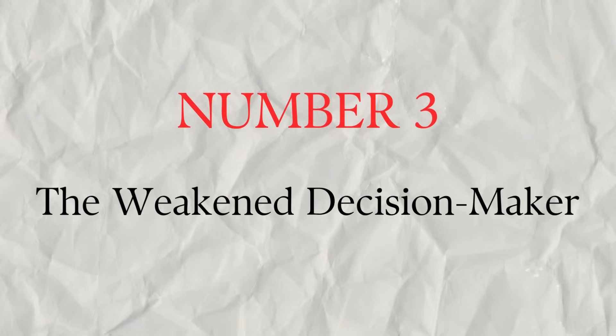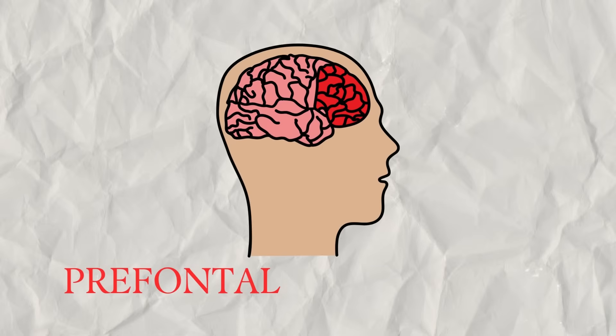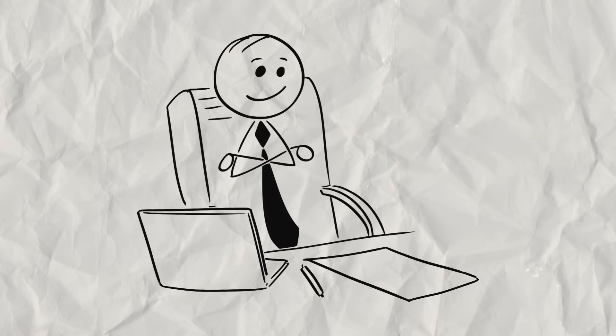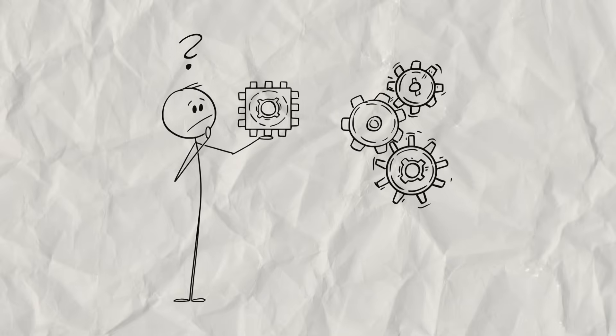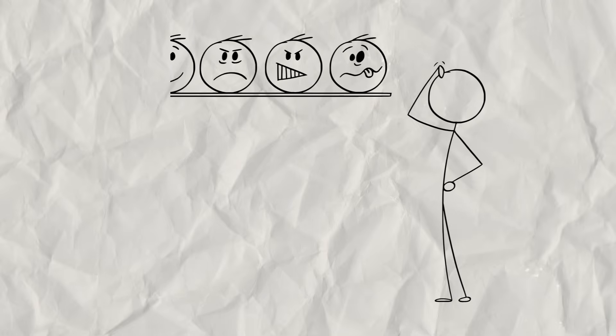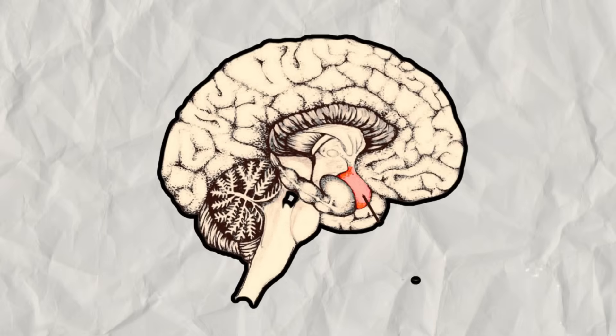The Weakened Decision Maker. At the front of your brain, right behind your forehead, is the prefrontal cortex, or PFC. This is the CEO of your brain. It's responsible for rational thought, problem solving, emotional regulation, and impulse control.